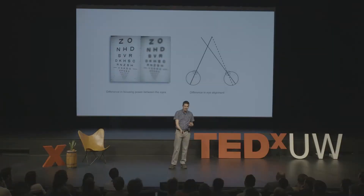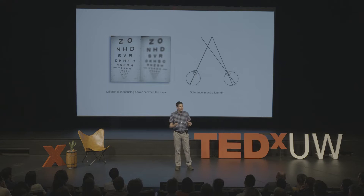During childhood, our brain develops to learn how to use information from our eyes — it learns how to see. And as I mentioned before, information from our senses can directly influence the development of our brain. Now some children have a difference in the images seen by the two eyes during this early stage of development.